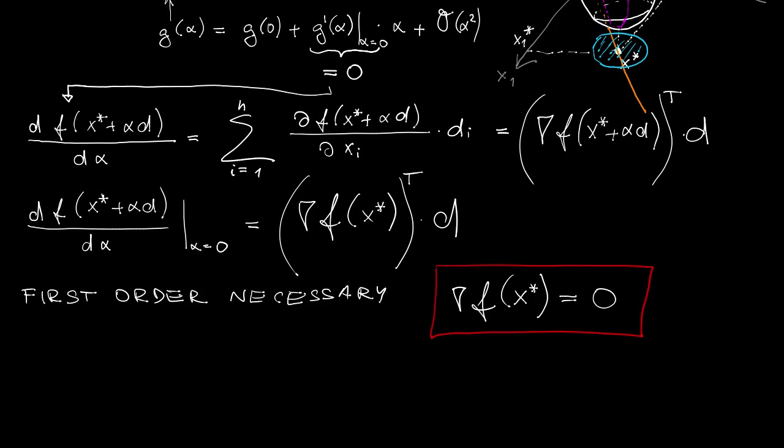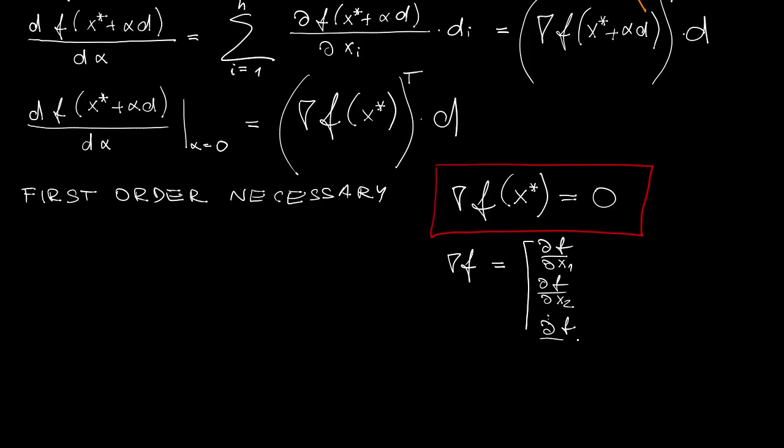So pretty straightforward generalization of what we know from scalar functions of scalar arguments. Note that in this course, we will adhere to the convention that gradient is a column vector. You can find also in some literature that they like to regard it as a row vector. But let's adhere to the column convention.